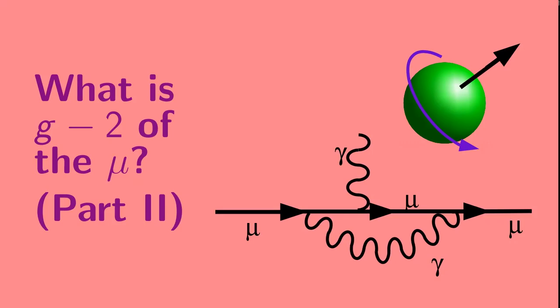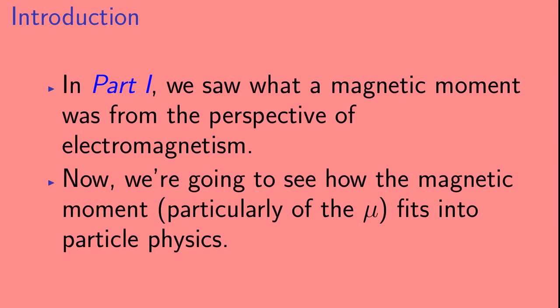Hi, welcome to What is g minus 2 of the muon? Part 2. So in part 1, we saw what a magnetic moment was from the perspective of electromagnetism. Now we're going to see how the magnetic moment, particularly of the muon, fits into particle physics.